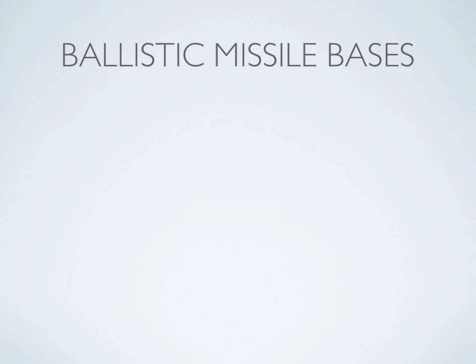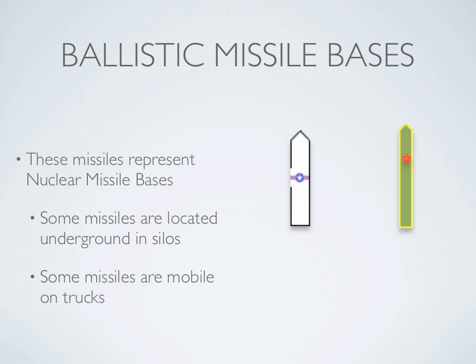Ballistic missile bases are represented by rockets on the map. The white rockets are NATO and the green rockets are Warsaw Pact. Each rocket represents multiple missile silos underground or on mobile launch pads where they are stored.